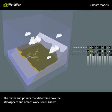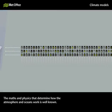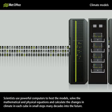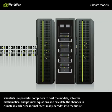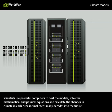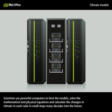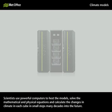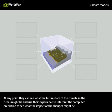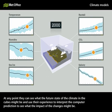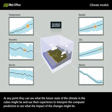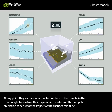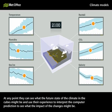The maths and physics that determine how the atmosphere and oceans work is well known. Scientists use powerful computers to host the models, solve the mathematical and physical equations and calculate the changes in climate in each cube in small steps many decades into the future. At any point they can see what the future state of the climate in the cubes might be and use their experience to interpret the computer prediction to see what the impact of the changes might be.